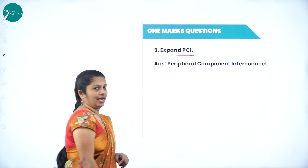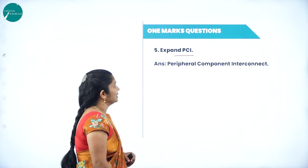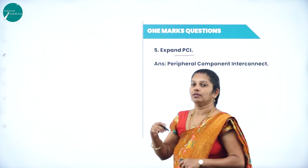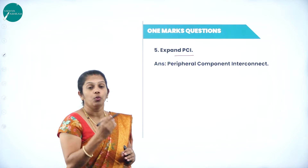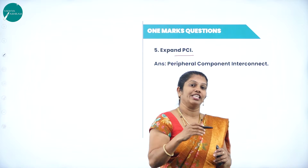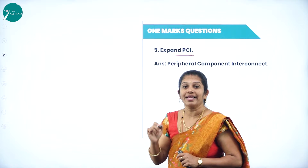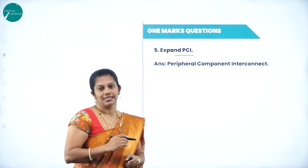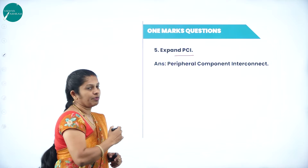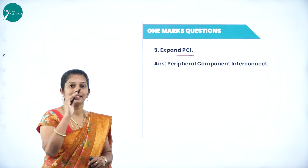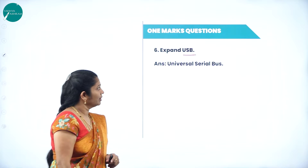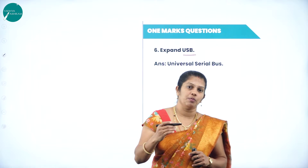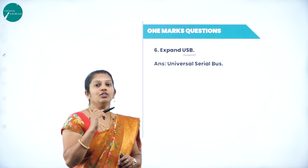The next question is PCI. PCI stands for Peripheral Component Interconnect, which helps to connect peripheral devices. From this chapter, majority of the time you will get expansion questions. Next, expand USB — that is Universal Serial Bus. USB stands for Universal Serial Bus, and you have USB ports as well as USB slots.